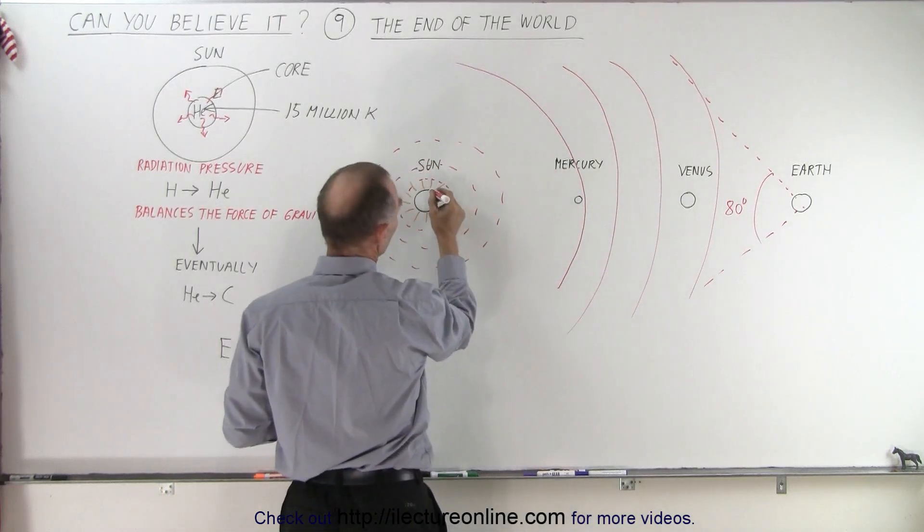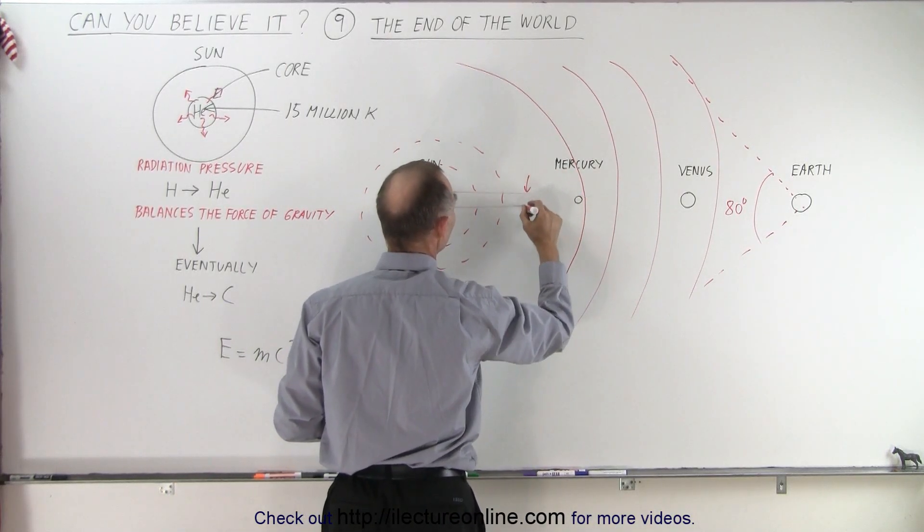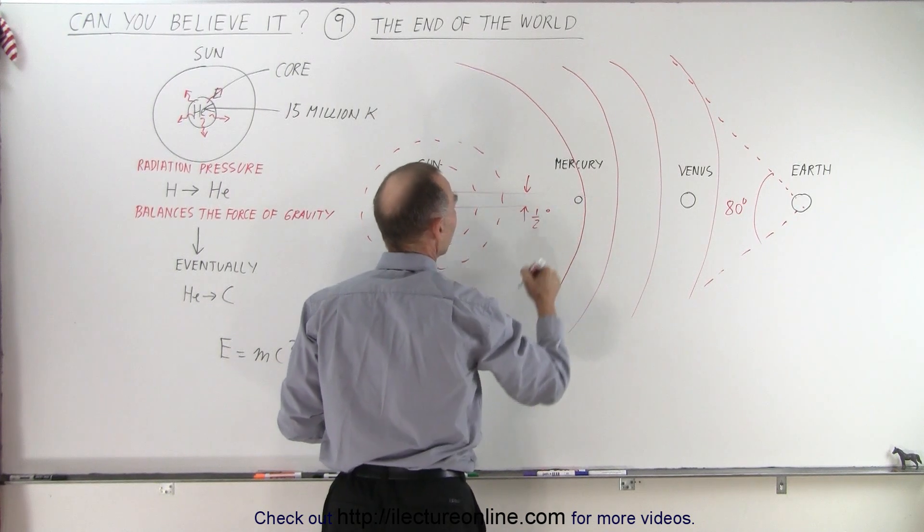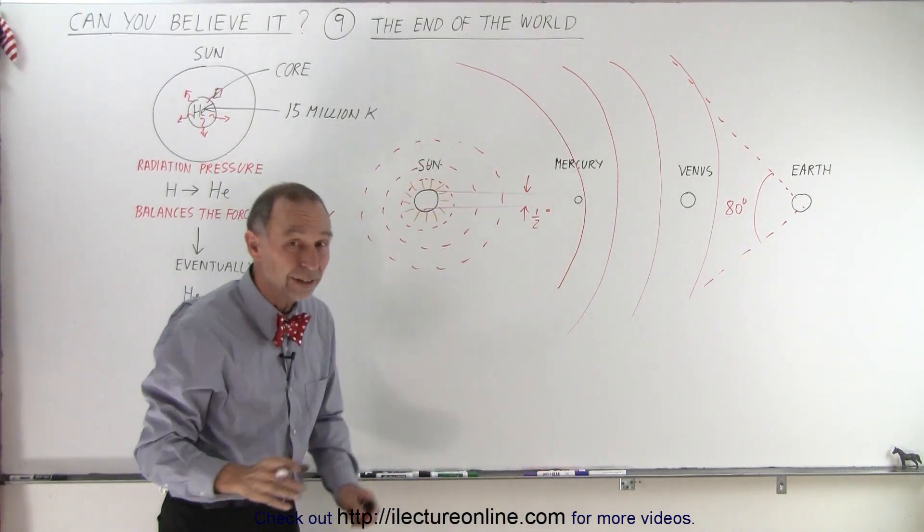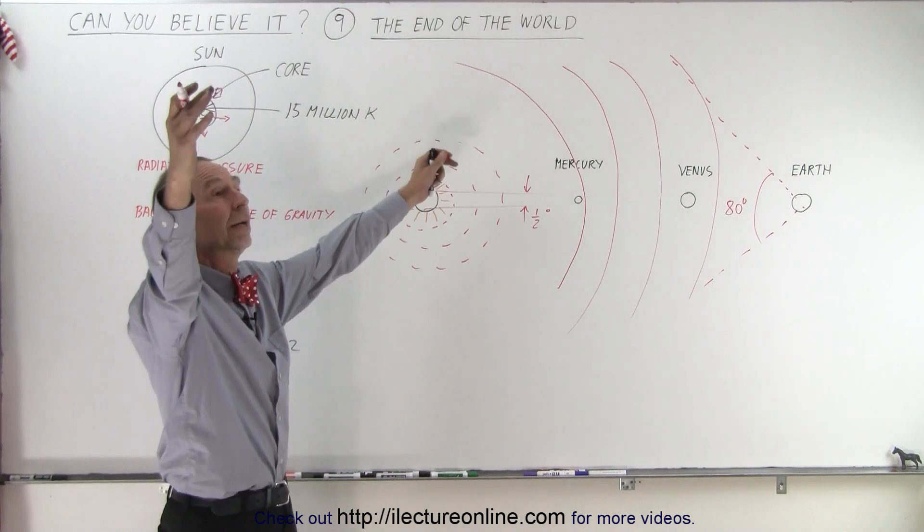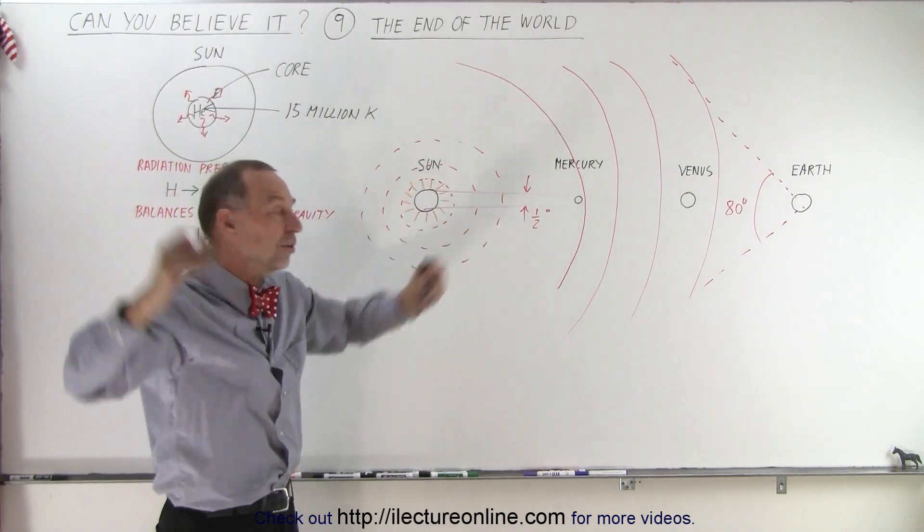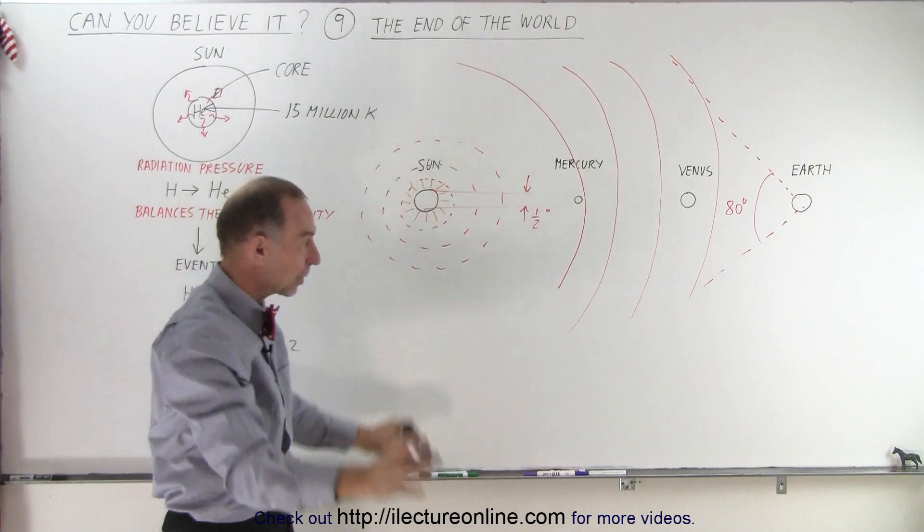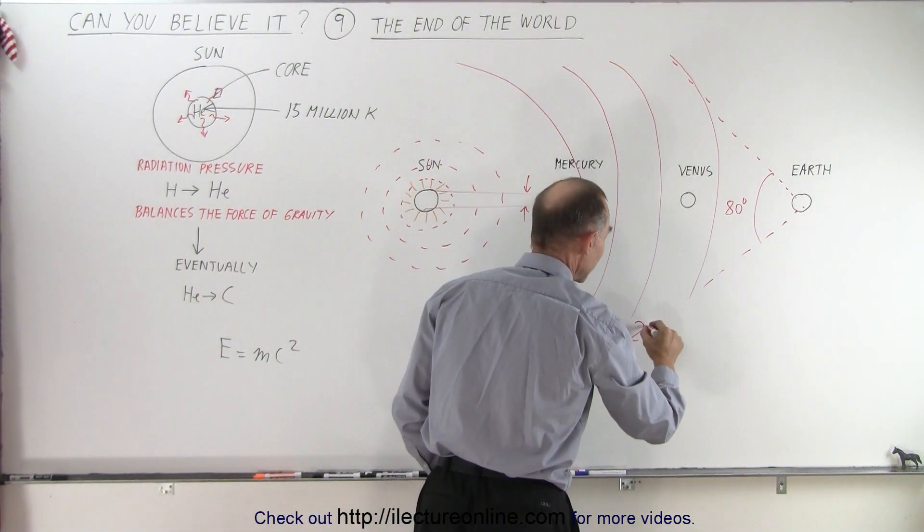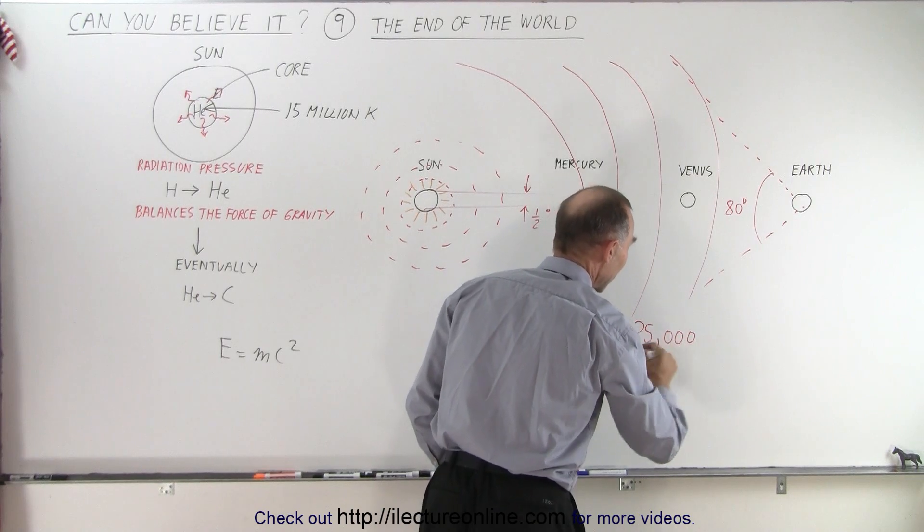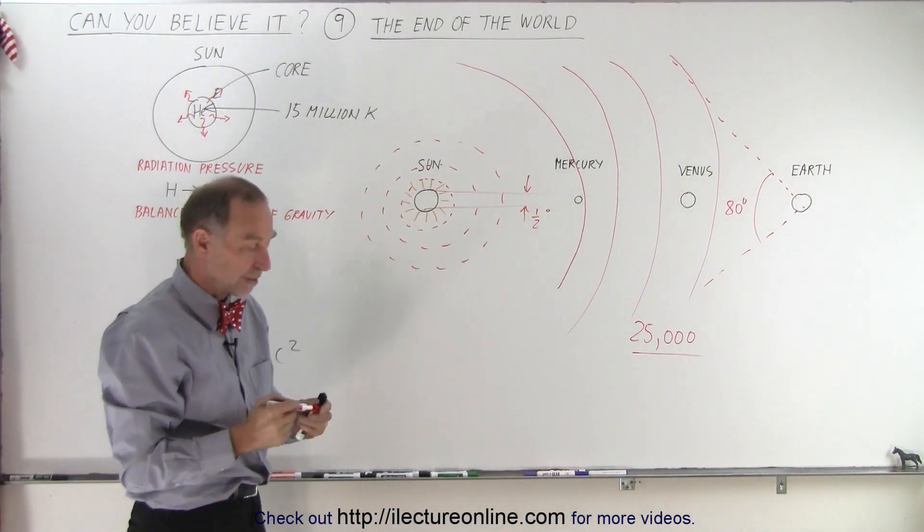Well the angle currently from the earth to the sun is about a half a degree. And so 80 is 160 times bigger than the sun is today. So the sun will appear in diameter 160 times bigger. And in area the sun will cover an area in the sky about 25,000 times as big as the sun appears today.